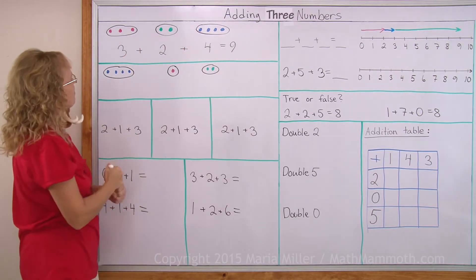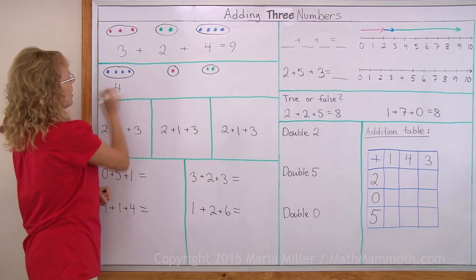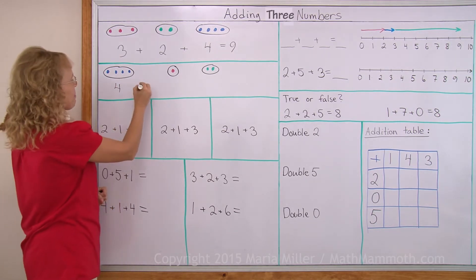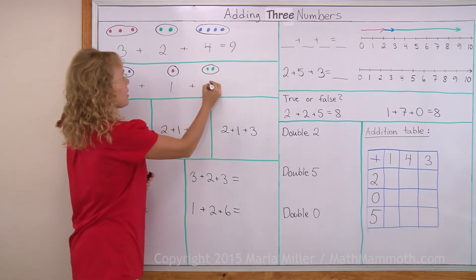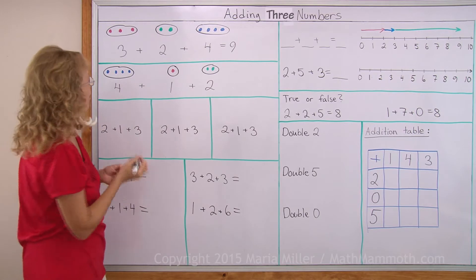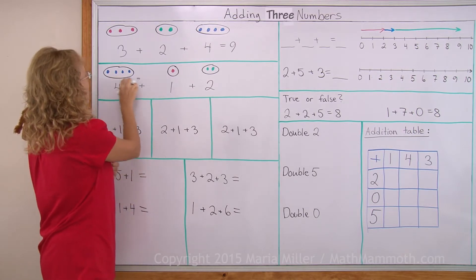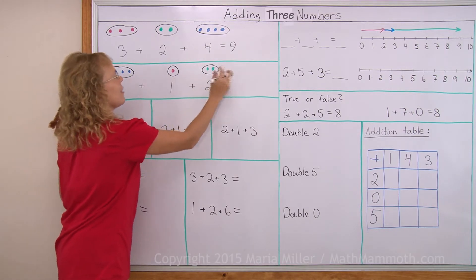How about here? Here are four blueberries plus one raspberry plus two green berries. And we have one, two, three, four, five, six, seven.